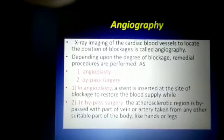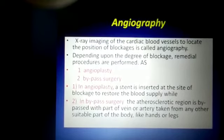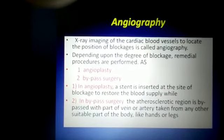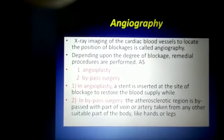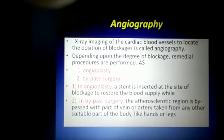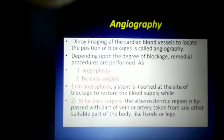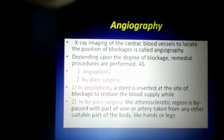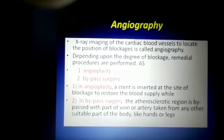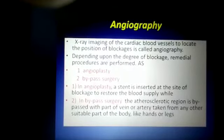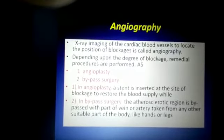In bypass surgery, the blocked region is kept as it is, and another artery is grafted onto the coronary artery to restore normal blood supply. This artery may be taken from any suitable part of the body, such as the hand or legs, but nowadays the artery is generally taken from the chest region for the grafting process and to perform the bypass surgery.